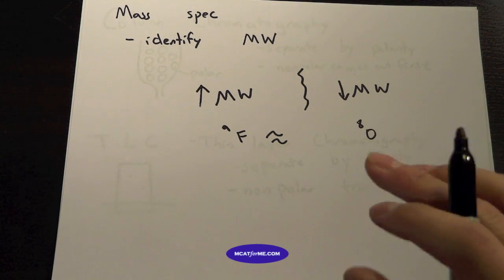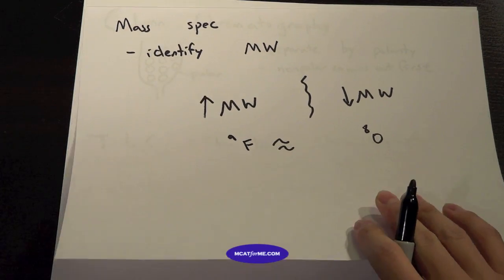So we really cannot identify these based on mass alone. Mass spec is very accurate, but there probably are better ways to identify them from each other.